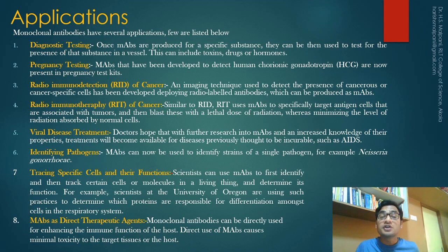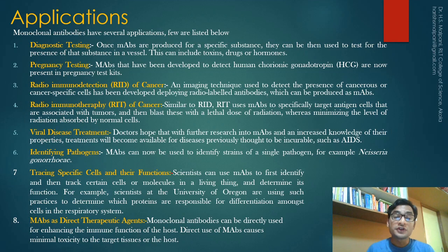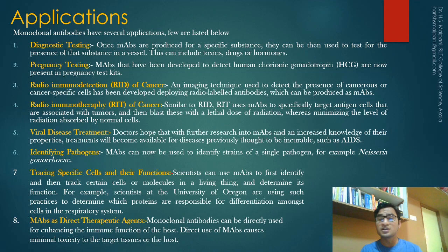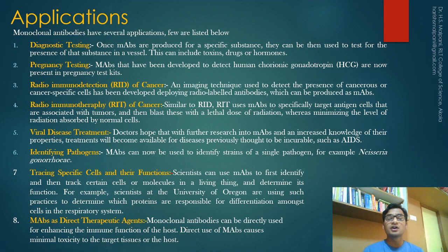Fourth is radioimmunotherapy (RIT) for cancer: RIT uses monoclonal antibodies to specifically target antigen cells associated with tumors and deliver a lethal dose of radiation, resulting in less radiation exposure for normal cells. Fifth is viral disease treatment — researchers hope monoclonal antibodies will provide treatments for diseases previously thought incurable like AIDS, and monoclonal antibody production for fighting COVID-19 is also in the pipeline. Sixth is identification of pathogens — monoclonal antibodies can be used to identify particular microorganisms, for example they are mainly used for Neisseria gonorrhoeae.